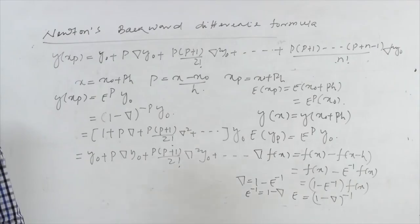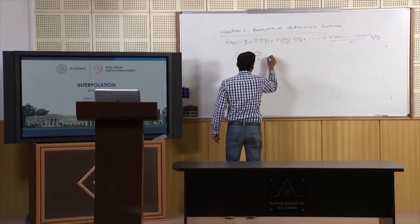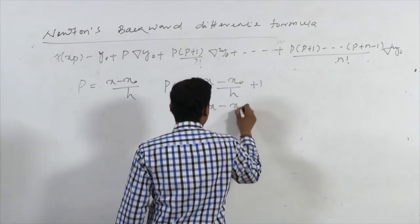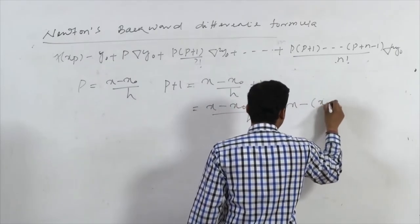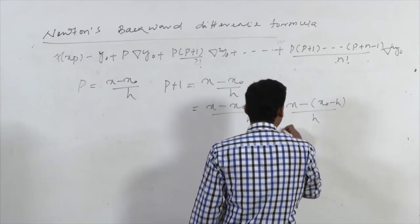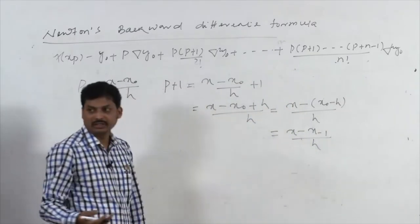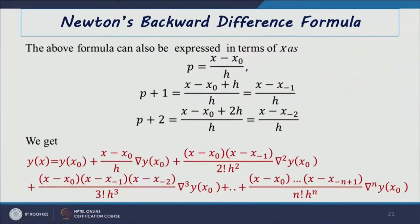To express in polynomial form, P = (x − x0)/h, and P+1 = (x − x0)/h + 1 = (x − x(−1))/h. Similarly P+2 = (x − x(−2))/h. In this form we can express Newton's backward difference formula as a polynomial taking all the backward points.